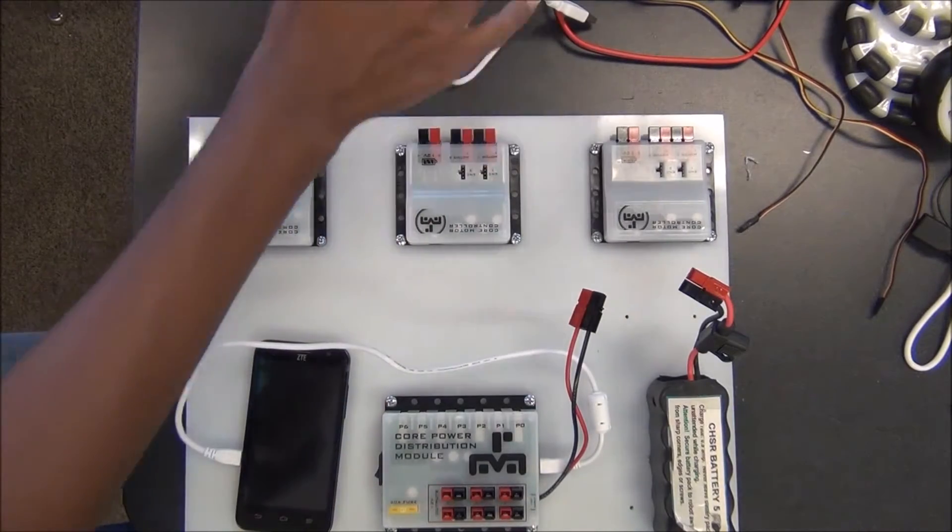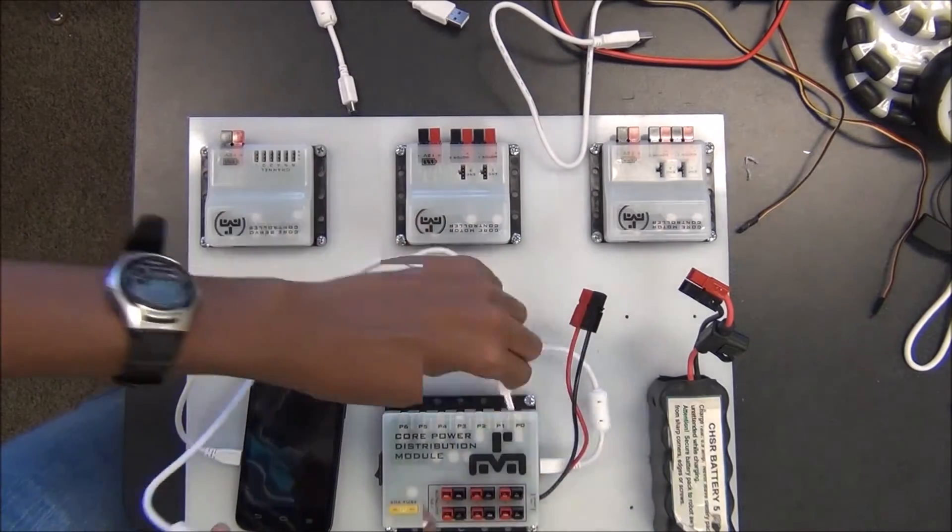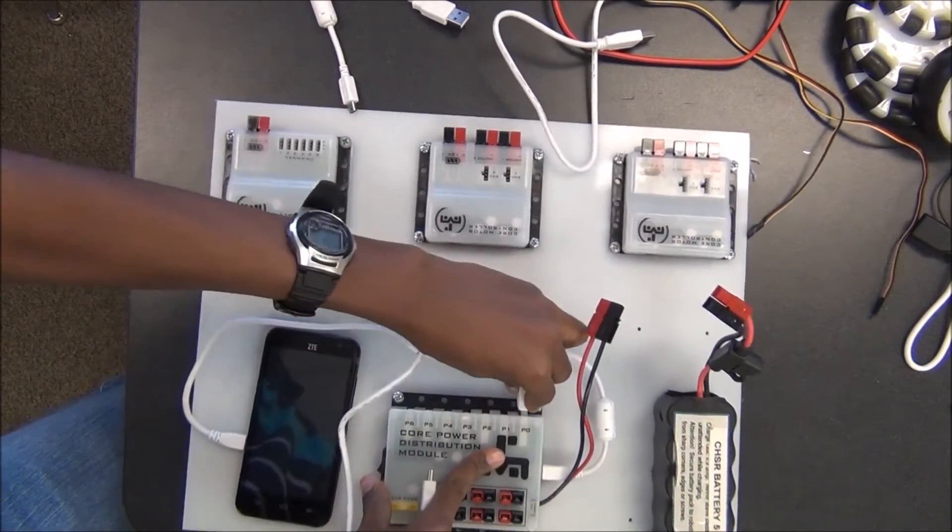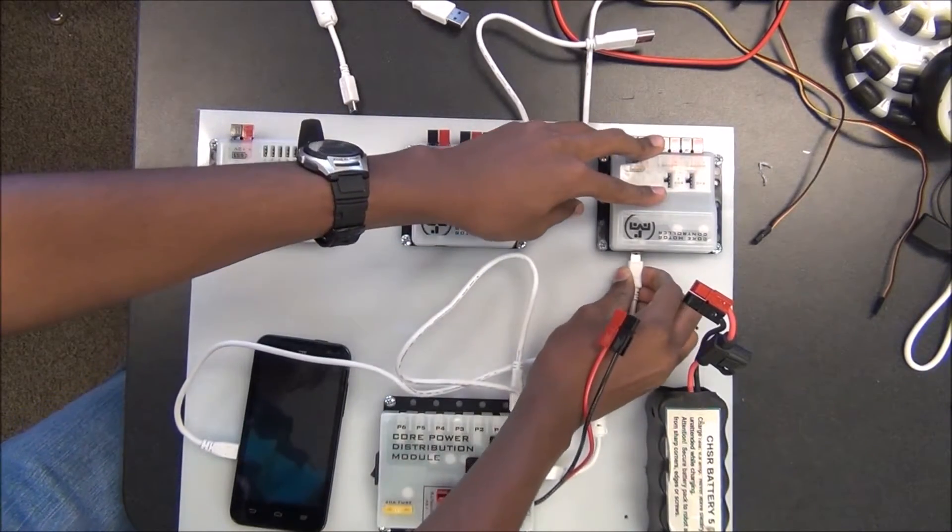Then I'm going to get the USB A to male USB mini B and plug that into port zero on the core power distribution module. I'm going to plug it into a motor controller.